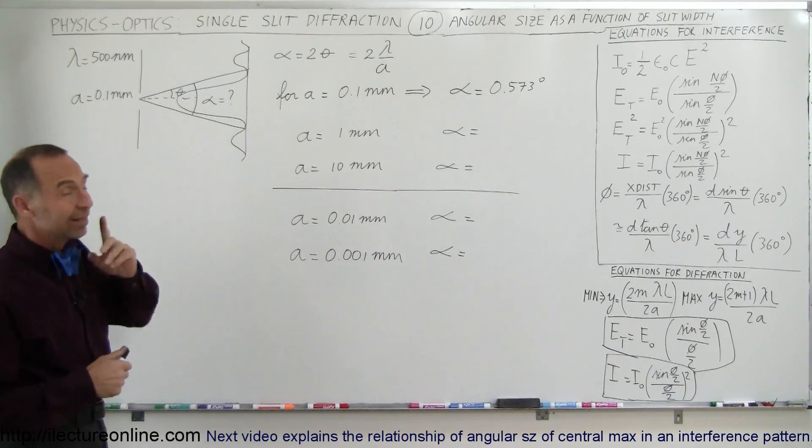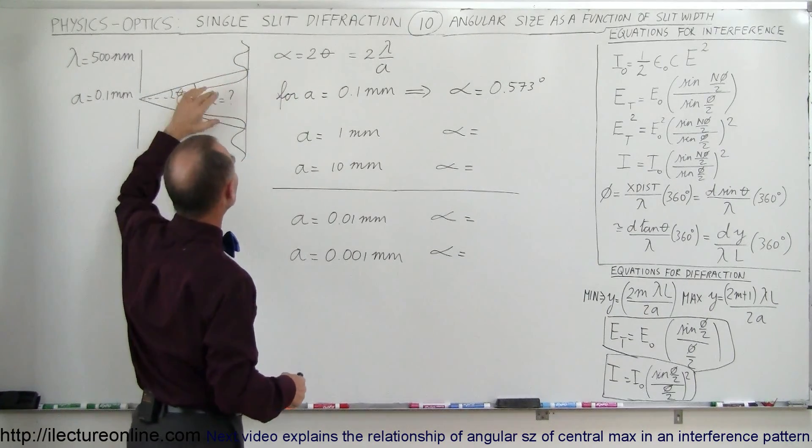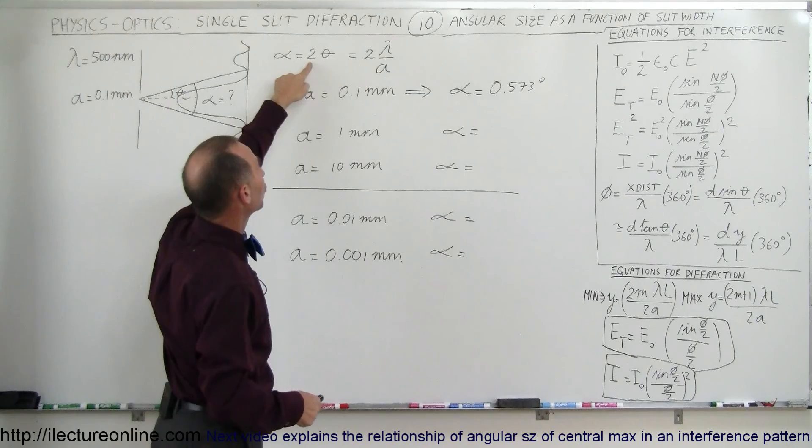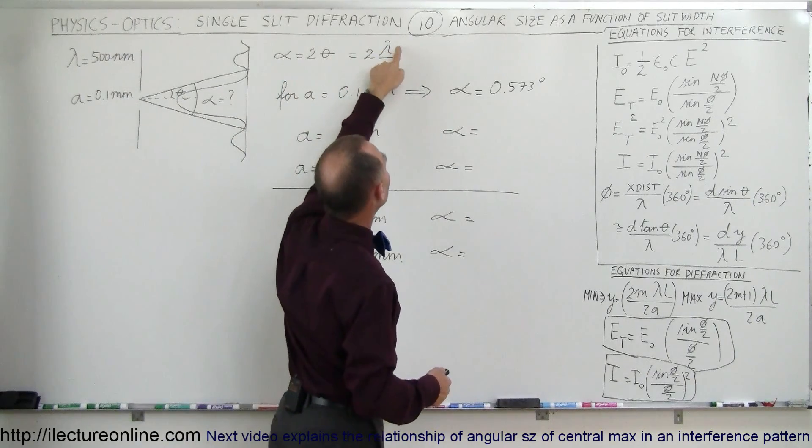Since we calculated on the previous video that the angular size of the central maximum is equal to alpha, which is twice the lookup angle, and we know that theta can be calculated to be lambda divided by A...